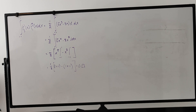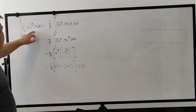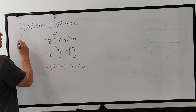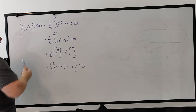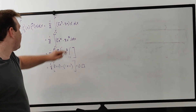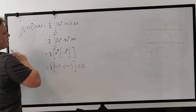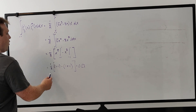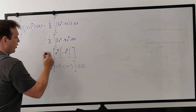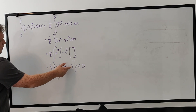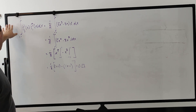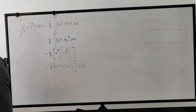Now we show P3 and P1 are orthogonal by integrating their product from negative 1 to 1. P3 is 1/2(5x³ minus 3x) and P1 is just x, so we integrate 1/2 times (5x⁴ minus 3x²) from negative 1 to 1. Evaluating gives 1/2 times [x⁵ minus x³] from negative 1 to 1, which yields 1 minus 1 minus (negative 1 plus negative 1) equals 0. Since the integral equals zero, the two functions are orthogonal.